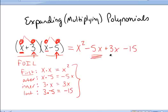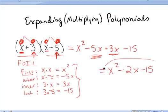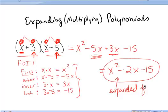Notice that negative 5x and positive 3x are like terms, so it simplifies to x squared minus 2x minus 15. This is the expanded form of that expression, and the original was the factored form.